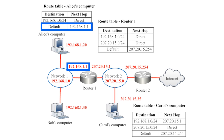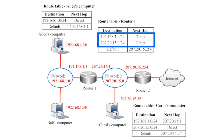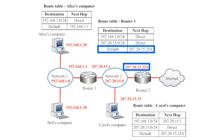Once router 1 receives the information, it will run the destination IP address through its own route table. If information is destined for any IP address on network 1 or network 2, then router 1 will send this information directly to that IP address, because it's connected directly to both of those networks. If the information is destined for any IP address outside of these two networks, then router 1 will default to sending the information to router 2. From router 2, this information would continue on through the Internet, most likely to be directed by several more route tables before reaching its final destination.